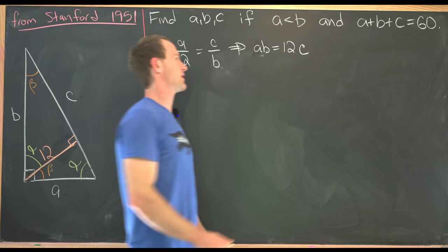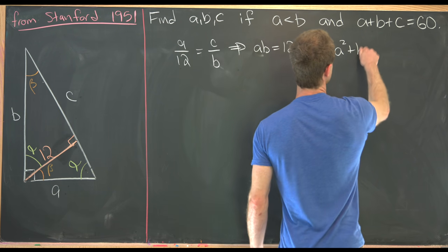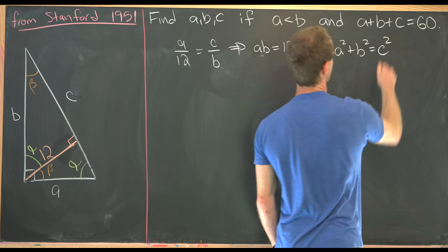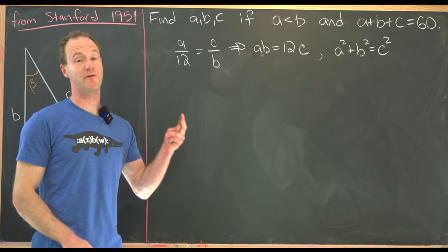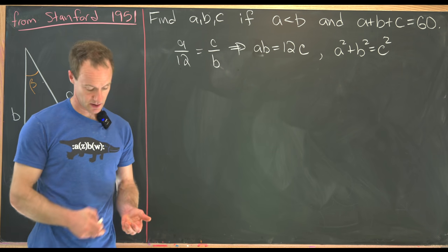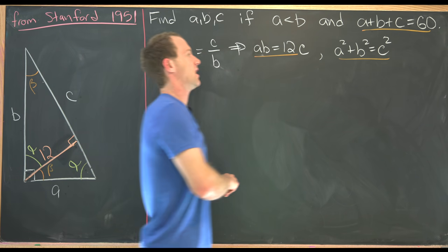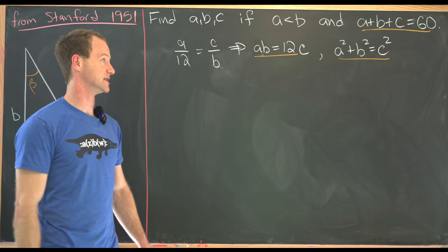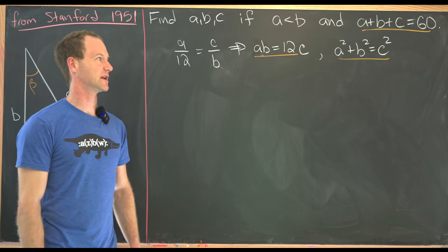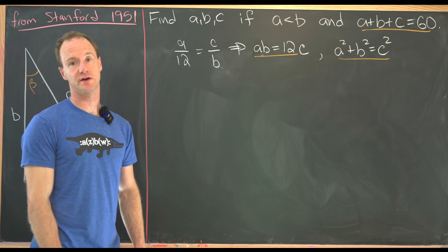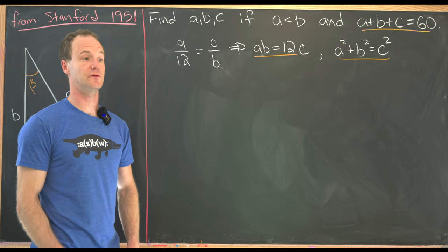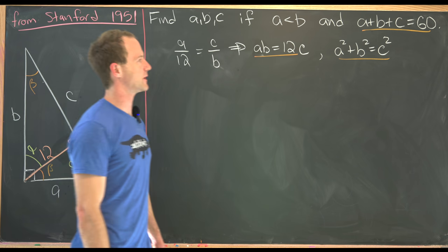Furthermore, by the Pythagorean theorem, we know that A squared plus B squared equals C squared. So now we've got a system of three equations and three unknowns. So here are our three equations, and our unknowns are A, B, and C. But notice this is a nonlinear system of equations. So maybe there's a little bit of work to do in order to find the solution. Let's see what we can do.